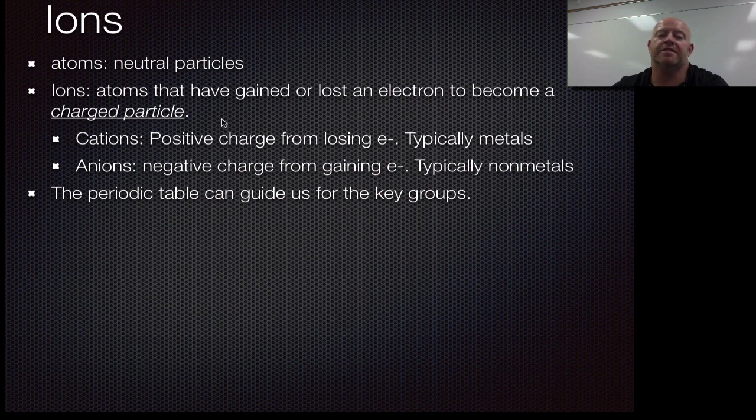If we have a positive charge, we call that a cation. That comes from losing electrons, so that's typically your metals. If you have a negative charge, that's from gaining electrons. We call that anions. Those are typically your non-metals.